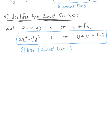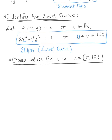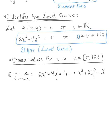We now sketch specific level curves by choosing varying values of c within the interval [0, 128]. For the first case, let c = 4. Plugging this into our level curve gives 2x² + 4y² = 4. Dividing both sides by 2, we get the simplified ellipse x² + 2y² = 2. This is our first level curve to sketch.